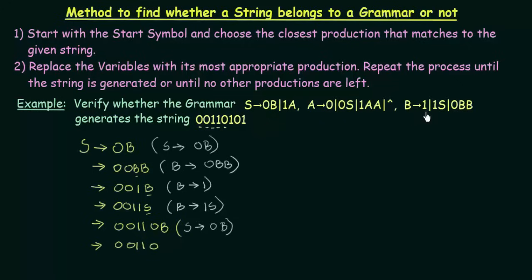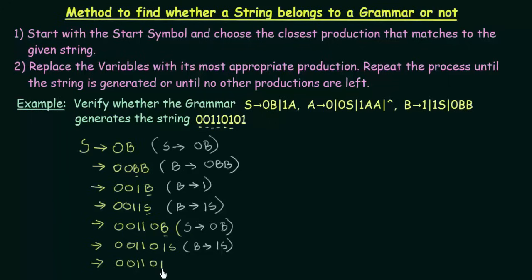From B, if I need to get a 1, I can get 1 directly, but if I choose that production my string will end prematurely. I cannot end my string yet, so I will choose the production where B gives 1 followed by the variable S. So I replace this B with 1S — using the production B gives 1S. Now we got this 1, and I need a 0, and what I have is S. In order to get 0 from S, I use the production S gives 0B, so this S is replaced by 0B.